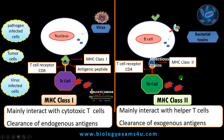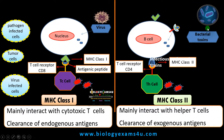In short, MHC class 2 interacts with T helper cells; T helper cells can only recognize an antigenic particle bound to MHC class 2. Therefore, MHC class 2 is primarily involved in the clearance of exogenous antigens such as bacterial toxins, viral particles, and other toxins. One more point: both MHC class 1 and MHC class 2 are involved in graft rejection.